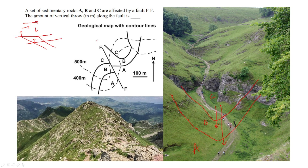Now look at the fault plane — it is a straight line even on this topography. Why? This is important. If there is any plane which is oriented vertically, it will have a straight outcrop on the surface — on any topography, whether the topography is horizontal or whether there are ridges or valleys, it will be a straight line.